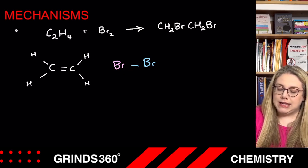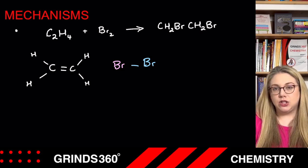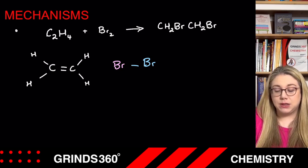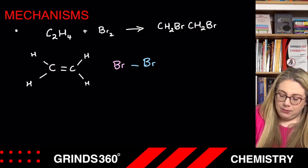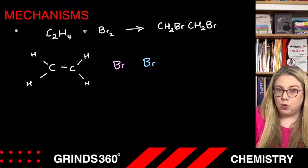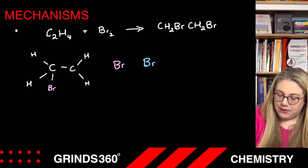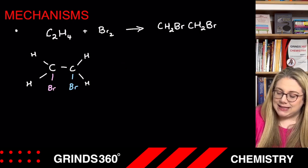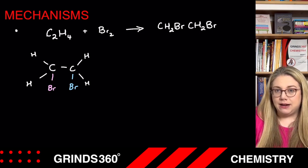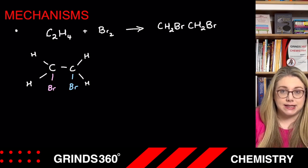In order to test for unsaturation, you add bromine water to the gas and give it a good shake. If you see a colour change from red to colourless, then unsaturation is present because the pi bond between the two carbon atoms breaks, the sigma bond between the two bromine atoms breaks, one bromine atom adds onto one carbon and the other bromine atom adds onto the other carbon atom — they can't add onto the same carbon. That is an addition reaction, and what's happening is you are breaking bonds in the reactants and forming bonds in the product.